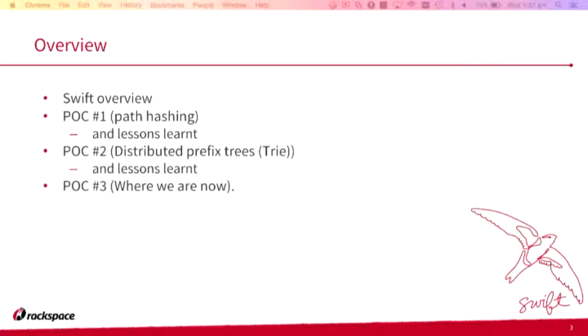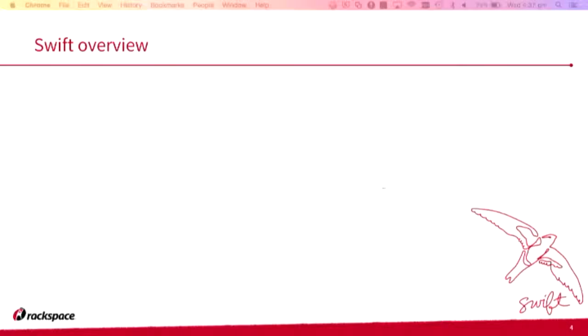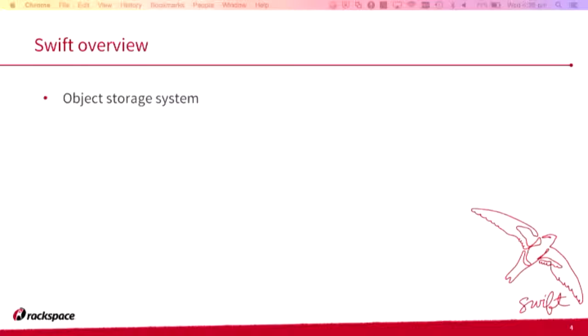Let's get a show of hands. How many of you know what OpenStack Swift is? How many of you run OpenStack Swift? How many know how OpenStack Swift works under the hood? We'll go through it very quickly. It's an object storage system — if you didn't know that much, now you do. We follow the REST API, which means you can use curl to talk to this object storage system.